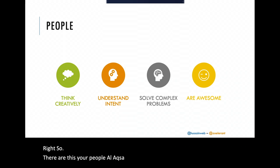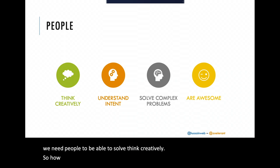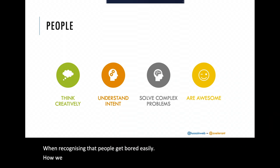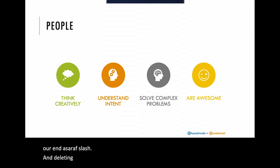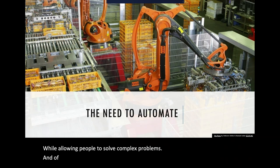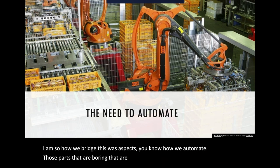People are complex entities — not simple machines where you put in one input and get one output. We need people to solve things creatively, but how do we make sure they do their best work while recognizing that boredom leads to mistakes? I'm sure you've heard stories of someone typing 'rm -rf /' and deleting an entire OS. That's where we get to automation — automate the boring, repetitive parts and let people do the creative work.